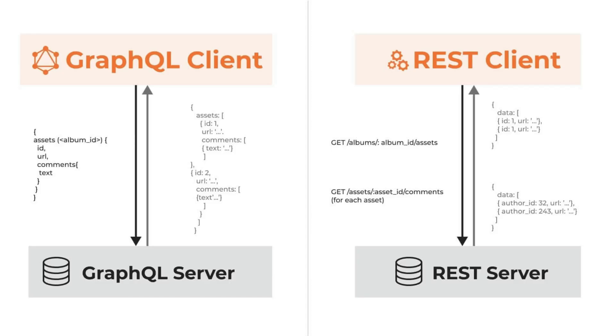GraphQL creates a kind of contract between your backend and frontend team because you define a predefined schema by which you supply client data from your API. Looking at an example, on the right with a REST client you have to make multiple requests — first for the album assets, then supply an asset ID. On the left with GraphQL, you can do both things in one query, which saves bandwidth and avoids duplicating endpoints.